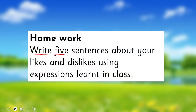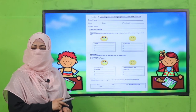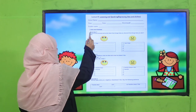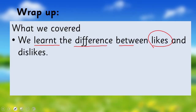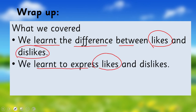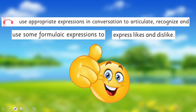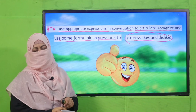Here is your homework: write five sentences about your likes and dislikes using the expressions we just learned. My fellow teachers, the worksheet, lesson plan, and PowerPoint presentation links are given — click, download, and provide printed worksheets to students for practice. Students will complete the box mentioning likings and dislikings — there are three practices on this worksheet. In this way, we learned the difference between likes and dislikes, learned to express them, and learned to use appropriate expressions. We have achieved today's SLO: to use appropriate expressions in conversation, to articulate, recognize, and use formulaic expressions to express likes and dislikes.